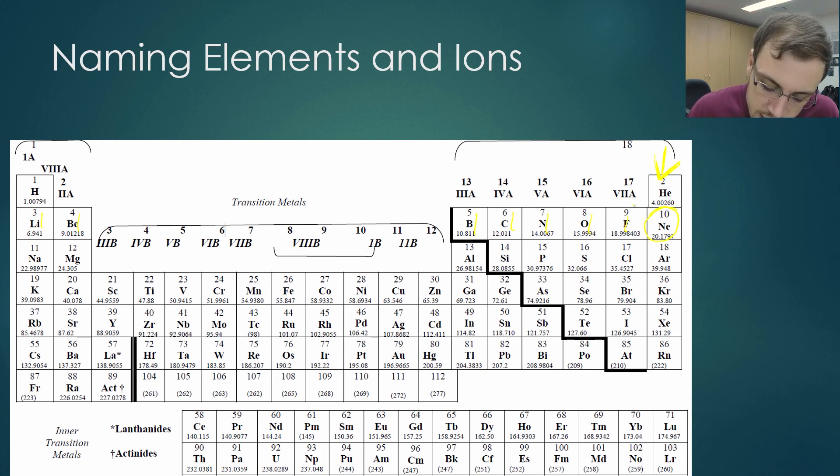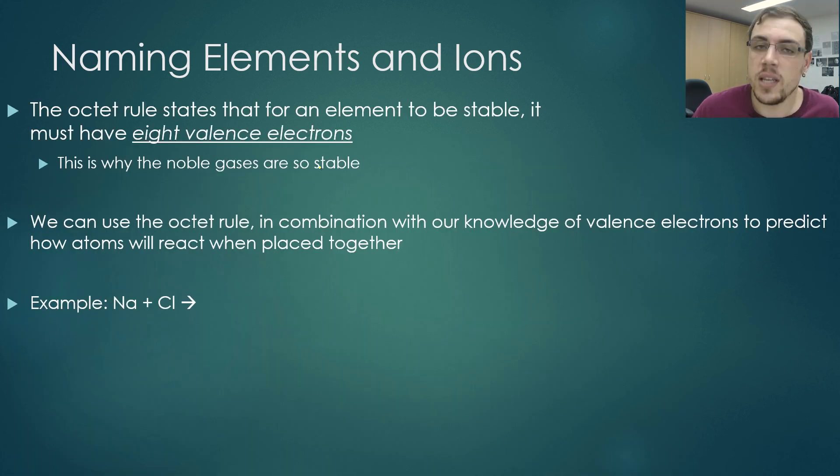All of these other elements, however, not quite the same story. Coming back now to the octet rule, because each and every element strives to be stable, they all strive to have eight valence electrons. What we can do is, with this new found information of the periodic table and valence electrons, is that we can use that to predict how these atoms will react.